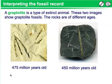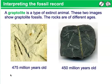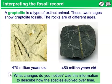Interpreting the fossil record. A graptolite is a type of extinct animal. These two images show graptolite fossils. The rocks are of different ages. What changes do you notice?